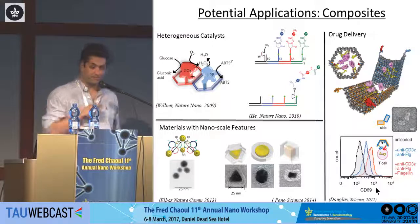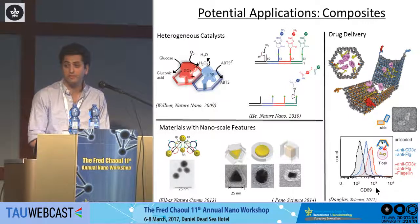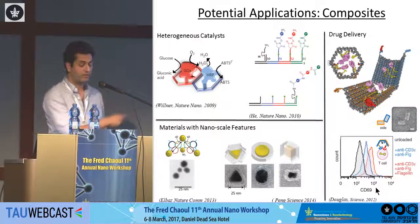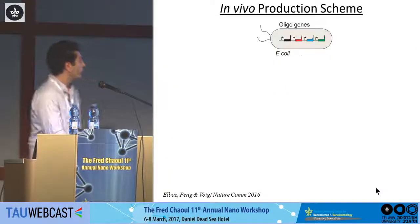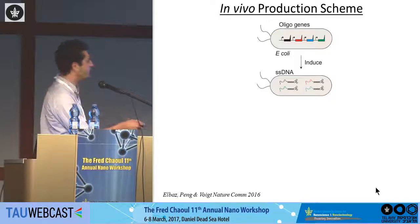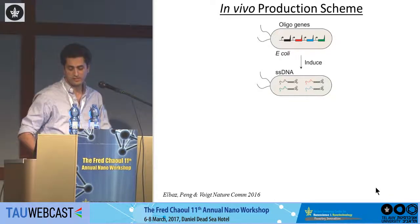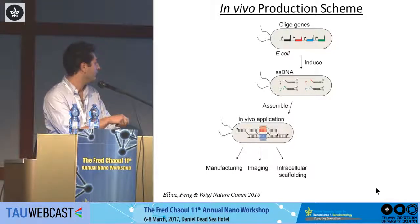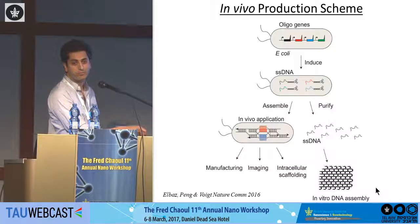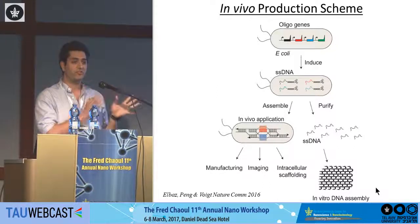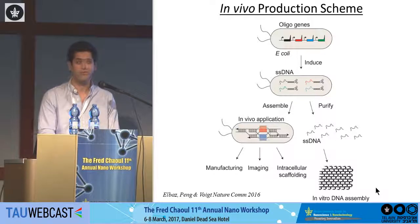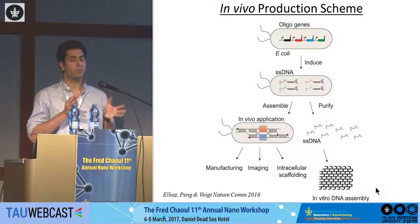My main question and research topic: can we do these things inside the cell? Can we genetically modify the cell, introduce a new genetic program, and have it synthesize DNA nanostructures? We want a bacteria with new genes — induced by light or small molecules — that will synthesize single-stranded DNA. You can think about manufacturing, imaging, or intracellular scaffolding. And one motivation is just to purify the oligos and make them cheaper.